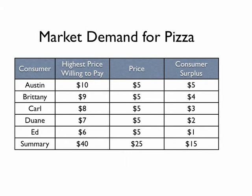If we tabled that, we would note the difference: the highest price willing to pay, subtract the price, yields the consumer surplus. In Austin's case, he was willing to pay $10, the price was only $5, so his consumer surplus is $5, and so forth. We summarize that at the bottom, showing that the total highest price willing to pay was $40. The price actually ended up being $25 for all five customers, so the consumer surplus was calculated at $15.